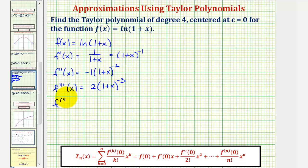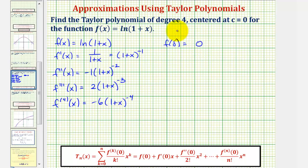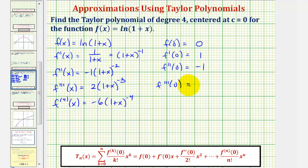The fourth derivative is equal to negative six times the quantity one plus x to the negative four. Evaluating at zero: f of zero equals natural log of one, which is zero; f prime of zero equals one; f double prime of zero equals negative one; f triple prime of zero equals positive two; and the fourth derivative at zero equals negative six.